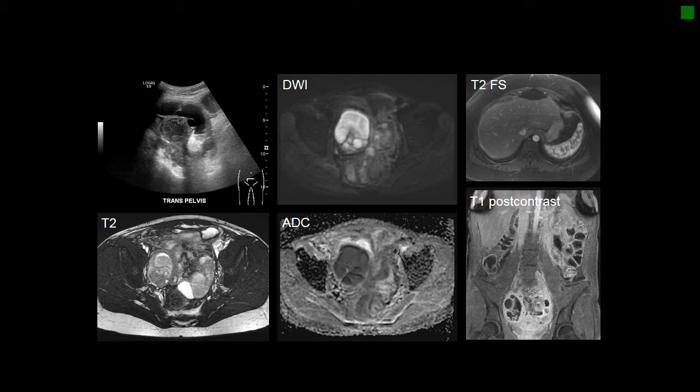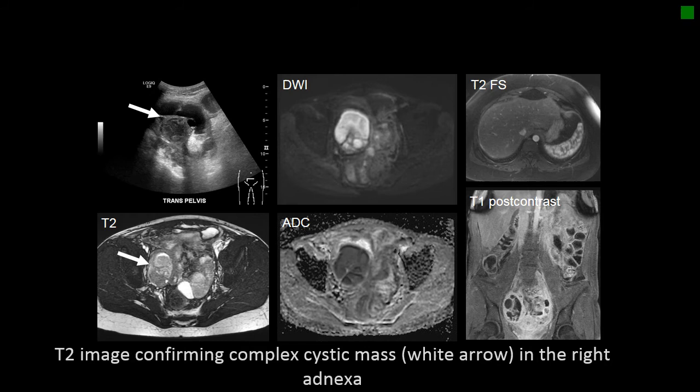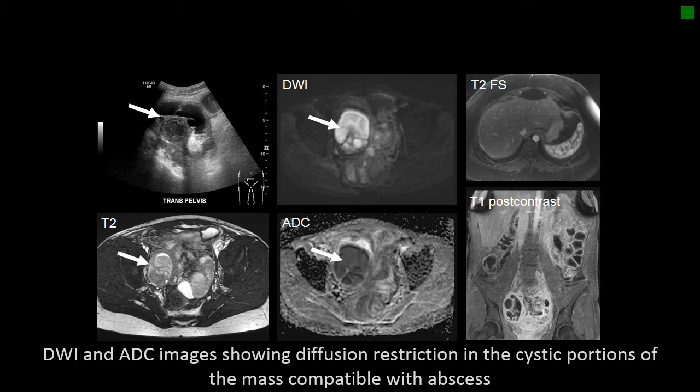We can see a complex adnexal mass, which was further characterized with MRI. The T2 image shows a complex cystic mass with a lot of irregular septations and irregular fluid. On DWI, there is clear restriction of diffusion within this cystic mass, making this a tubo-ovarian abscess.